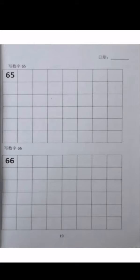Children, if you are done, let's look at the last one, page 19. Write 65 and 66. You need to complete the grid on page 19 writing 65 and 66, like this.